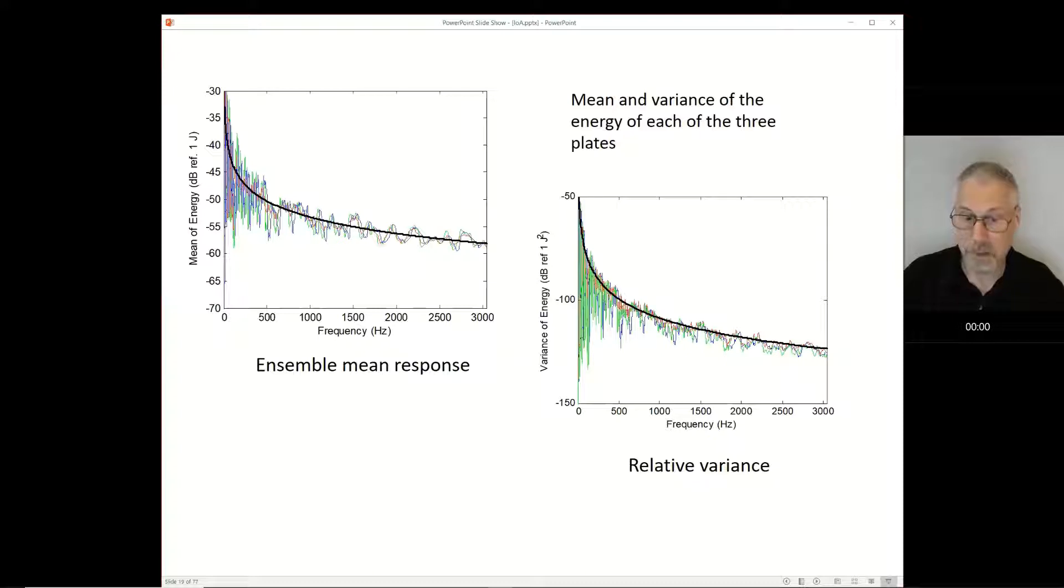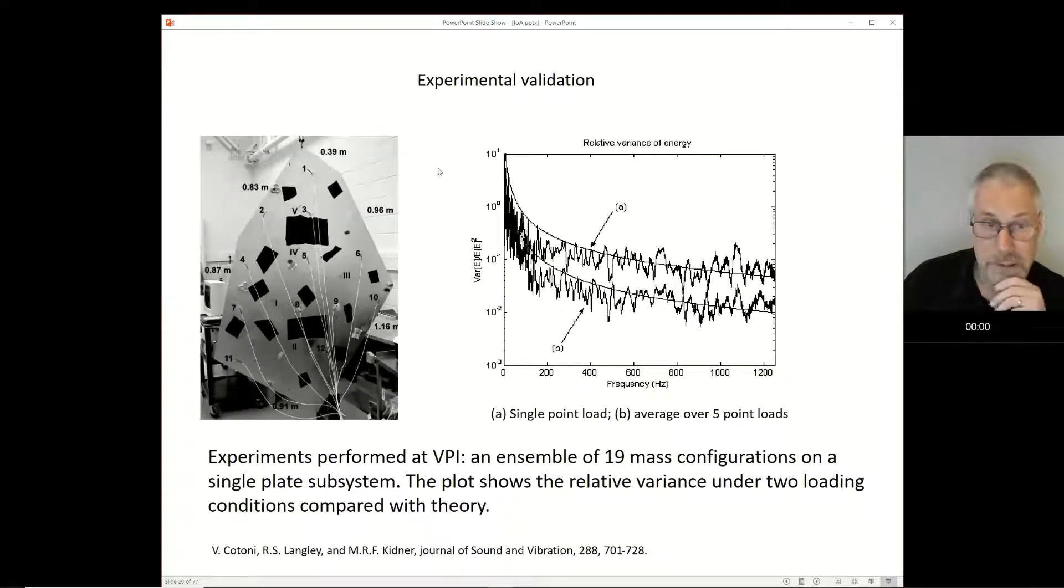The result for the mean is the same as statistical energy analysis would give us. What we can do is take those two curves, which are closed form solutions, and plot them on our results. That's what the black lines are. Without any knowledge of the cause of the randomness or any detailed calculations using FE or doing any Monte Carlo studies, we get those black curves as closed form solutions and they give us the answer. If we do experiments, we find that the theory can be validated. These are results obtained at Virginia Tech many years ago, showing that our variance equations agree reasonably nicely with experiments for a random plate.